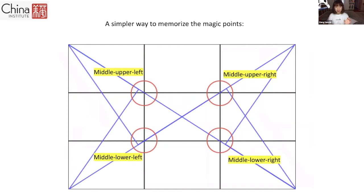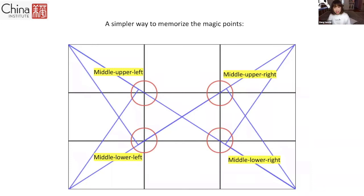You see the four right circles? And I noted them as middle upper-left and middle upper-right. The very center is the cross point — it's here, it's over here. These four parts are what we call magic points.